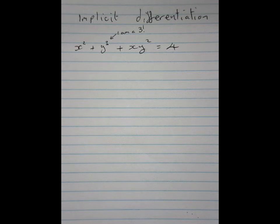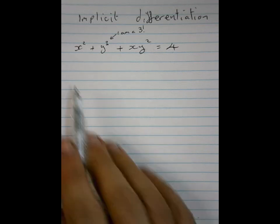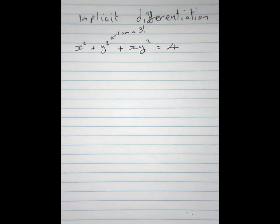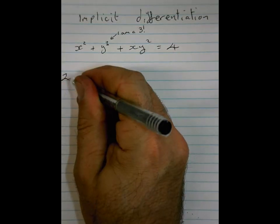So what we're going to do is show you how to do implicit differentiation. And the key thing here is that I know you can already differentiate x squared. x squared automatically becomes 2x.